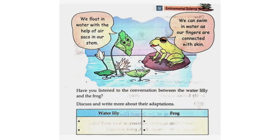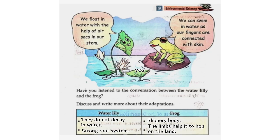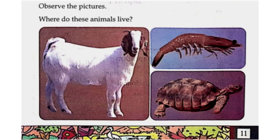Water lily: We float in water with the help of air sacs in our stem. They do not decay in water and have a strong root system. Frog: We can swim in water as our fingers are connected with skin. Slippery body. The limbs help it to hop on land.